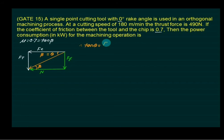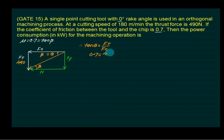Since tan(theta) equals tan(beta), we have Ft divided by Fc equals 0.7. Ft is given as 490 N, so 490 divided by Fc equals 0.7, giving us a cutting force Fc of 700 Newton.